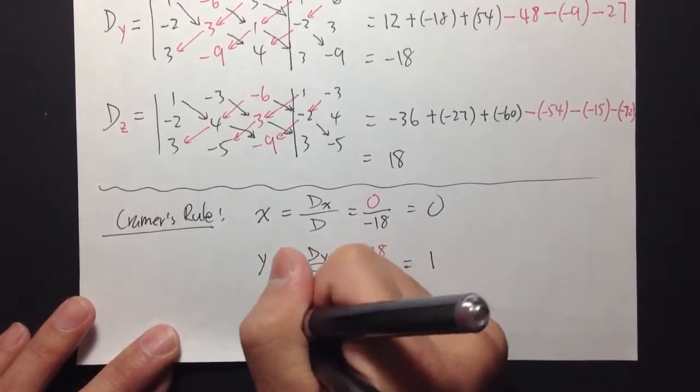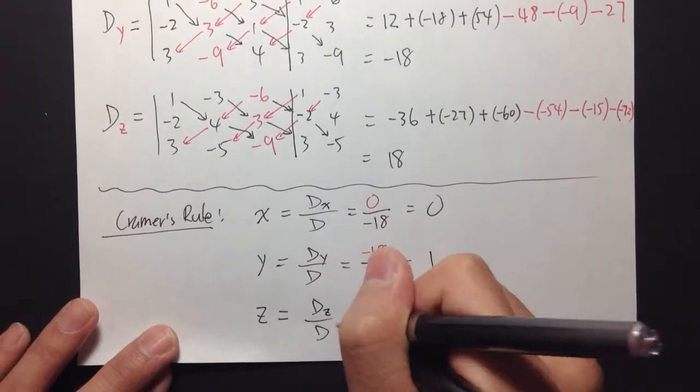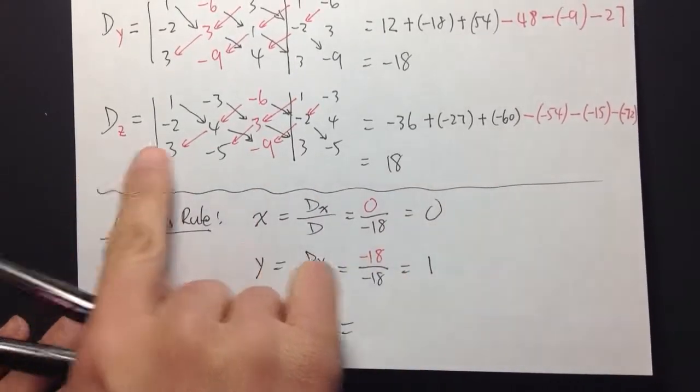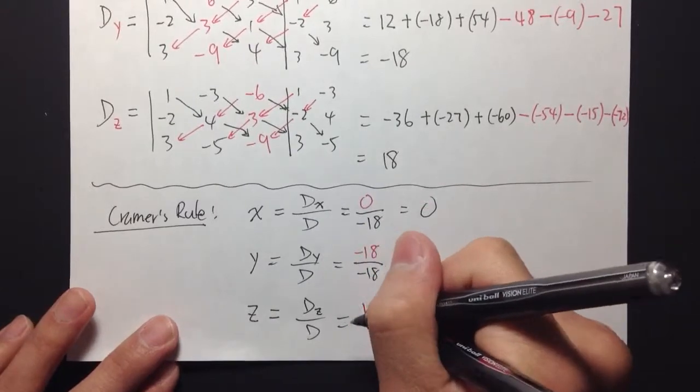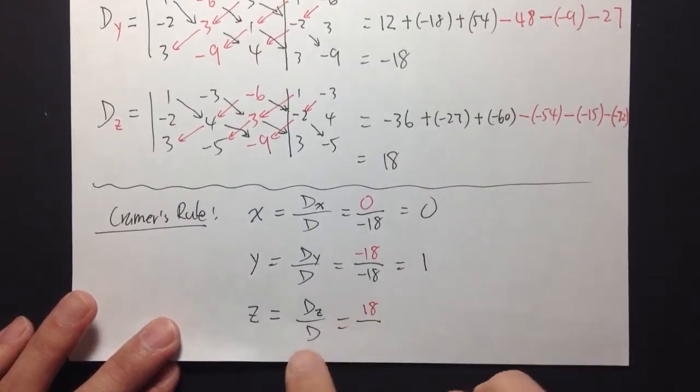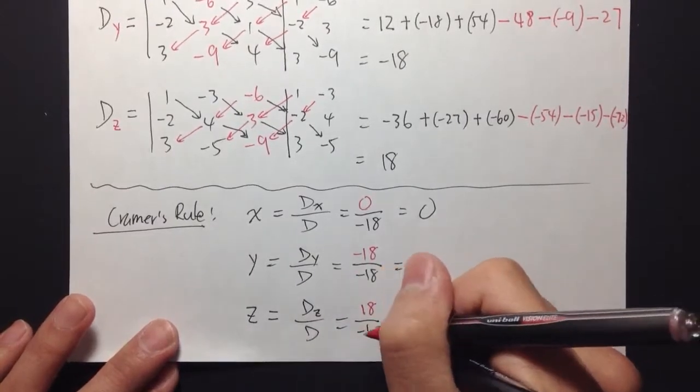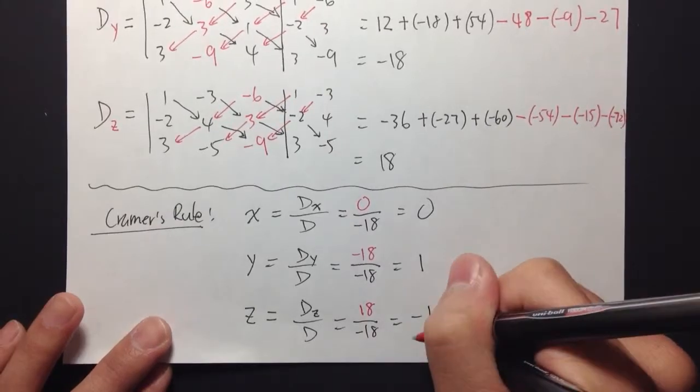And next, z is equal to dz over d. dz is equal to a positive 18, so I'm going to put positive 18 on top over d, which is again negative 18. And 18 divided by negative 18 is equal to negative 1.